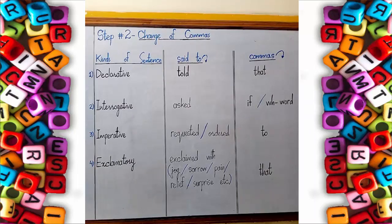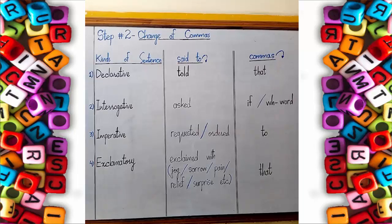I hope you have understood the definition of narration and the steps we take to make an indirect sentence. There are five steps; I have explained two steps out of five, and that's all for now — that will be too much learning in one video. There will be a second part of this narration, inshallah, either tomorrow or the day after tomorrow. I will give you narrative assignments in the second video. Assalamualaikum warahmatullahi wabarakatuh.